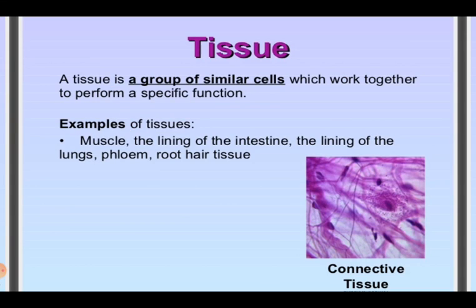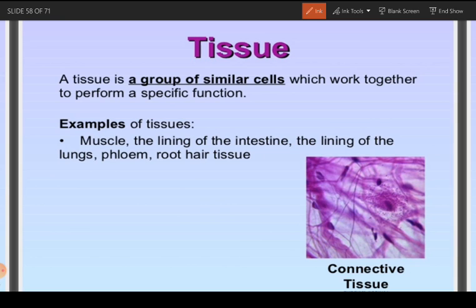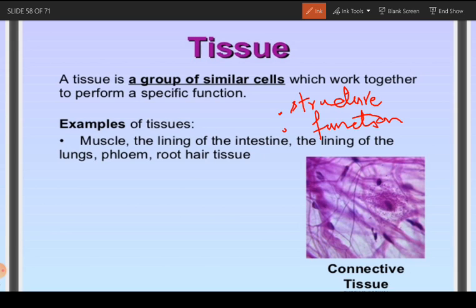What is a tissue? A tissue is a group of similar cells which work together to perform a specific function. Tissue is formed when many similar kinds of cells — similar in structure and similar in function — combine together to form a structure known as a tissue. Each tissue has a specific function to perform.